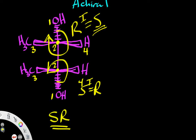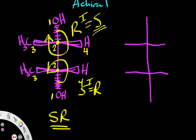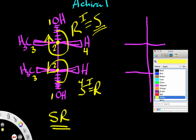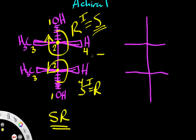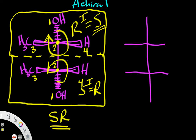Now let's compare this by drawing another Fischer projection. I want to point out something about this first Fischer projection: we can see an internal mirror plane of symmetry. Everything on this half of the molecule is the same as everything on this half of the molecule. That's what we mean by an internal mirror plane of symmetry — if we cut the molecule in half, we will have equal halves.